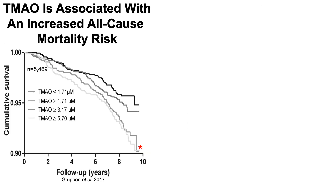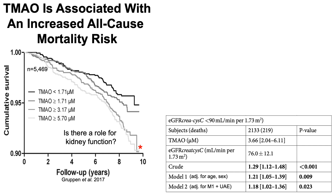So what are some of these other factors? In this study, Gruppen's group decided to look at the impact of kidney function on all-cause mortality risk. They separated subjects into two groups based on kidney function, using the estimated glomerular filtration rate (EGFR), measured via plasma creatinine and cystatin C. In this group, the average EGFR was 76. For the crude, unadjusted association, plasma levels of TMAO with all-cause mortality risk showed a significant 29% increase.